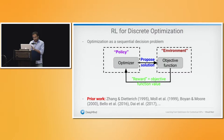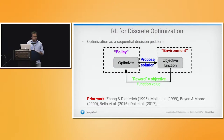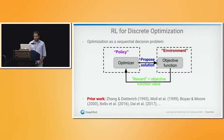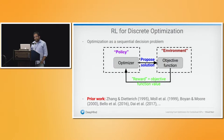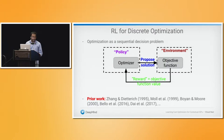There is a fairly natural way to phrase this as an RL problem. We can think of the optimization algorithm as being defined in terms of a policy that we learn. This policy proposes solutions, and the environment contains the objective function — the reward is a function of the objective value that a particular solution achieved. You can also get observations about how close you were to violating various constraints. This line of work is not new; in fact it's fairly old. There were papers in the 90s exploring this direction — Zhang and Dietrich is one of the earliest, and Buen and Moore had a series of papers with an algorithm called STAGE. More recently, there is a renewed interest in this area.